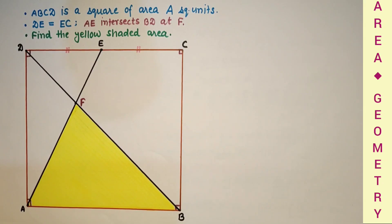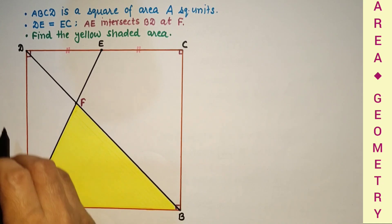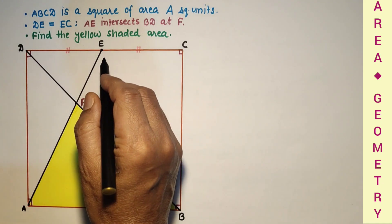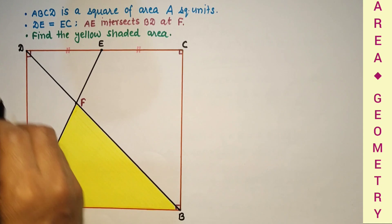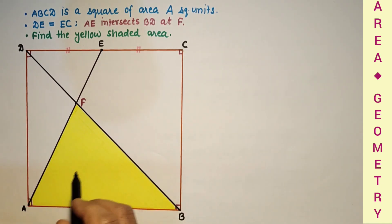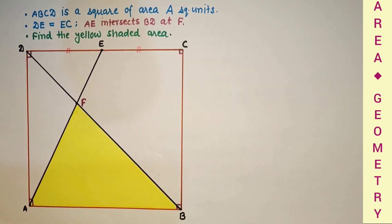Hello and welcome to my channel. In today's video we will discuss the area of the shaded portion. We are given a square ABCD whose area is A square units. E is the midpoint of DC, so DE is equal to EC. AE and diagonal BD intersect at point F, and we have to find the area of the shaded part.